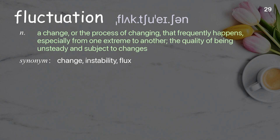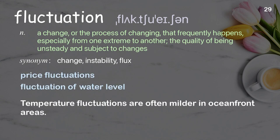Fluctuation: A change, or the process of changing, that frequently happens, especially from one extreme to another; the quality of being unsteady and subject to changes. Examples: Price fluctuations. Fluctuation of water level. Temperature fluctuations are often milder in oceanfront areas.